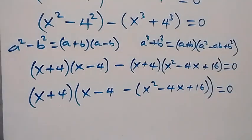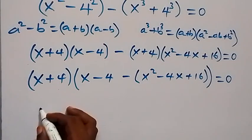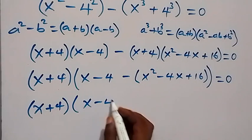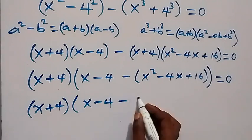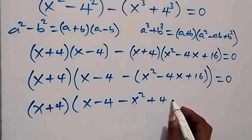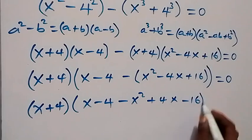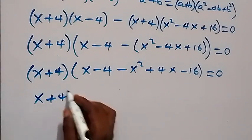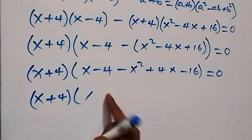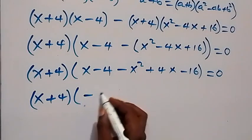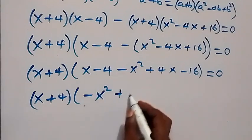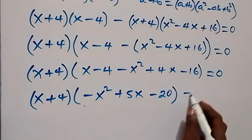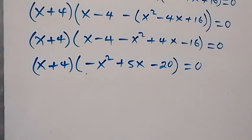We factor out x plus 4 as the common factor. Inside the remaining bracket we have: x minus 4, then minus, opening the bracket gives minus x squared plus 4x minus 16, equals 0. Simplifying further, we have x plus 4 times bracket: minus x squared plus 5x minus 20, equals 0.